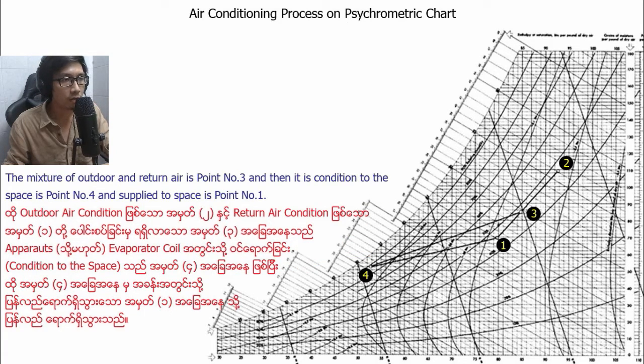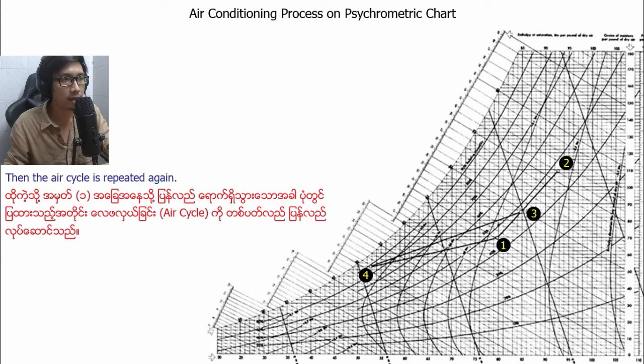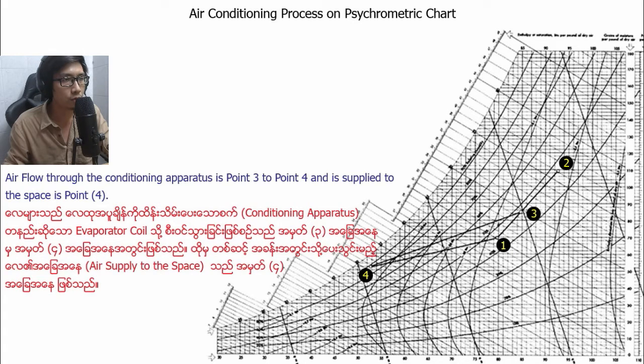The mixture of outdoor air and return air is point number three. Then it is conditioned to the space at point number four and supplied to the space at point number one. The air cycle is repeated. Air flows through the conditioning apparatus from point three to point four and is supplied to the space at point four.